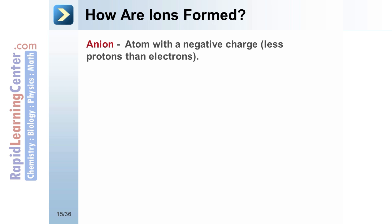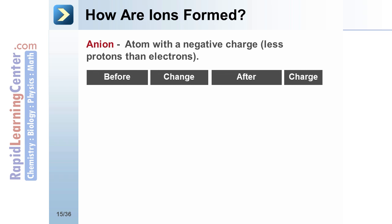An anion is an ion with a negative charge. An anion is formed from the addition of electrons. For example, an oxygen atom has eight protons and eight neutrons. This is a neutral atom.